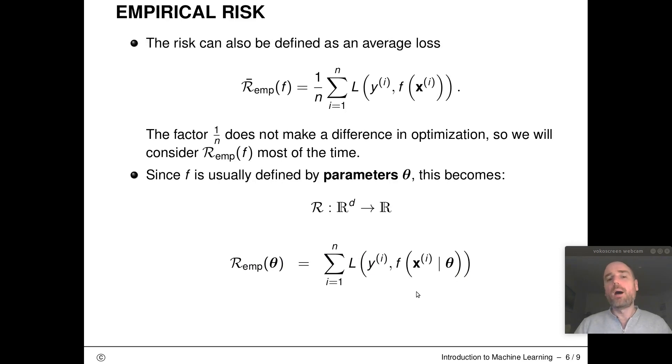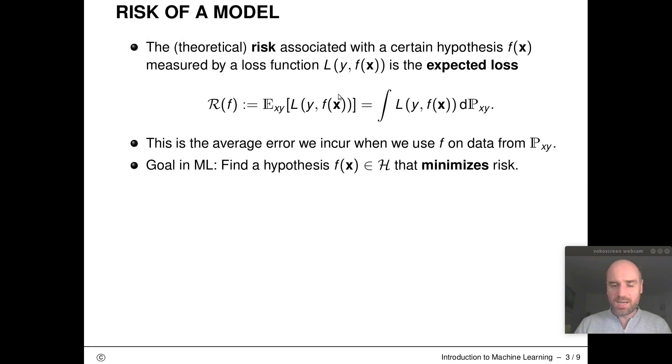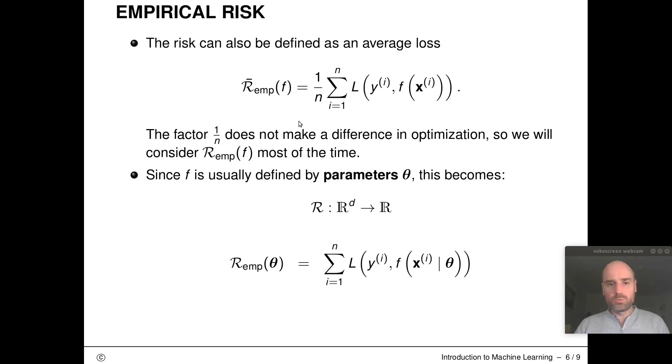Some extra remarks. I could also define this risk not as a summed loss but an average loss. This R bar here is kind of the correct approximation to that expectation, but if I only want to optimize for the best model F I don't care about this factor 1/n, so I can simplify that to this summed form instead of that average form.